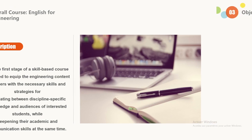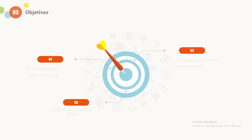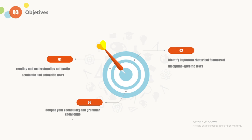The course is designed to help these teachers read and understand authentic academic and scientific texts, help them identify the main and most important rhetorical features of discipline-specific texts, and deepen their vocabulary and grammar knowledge.